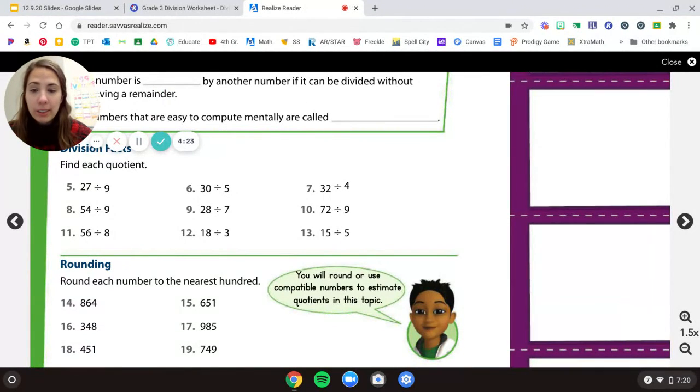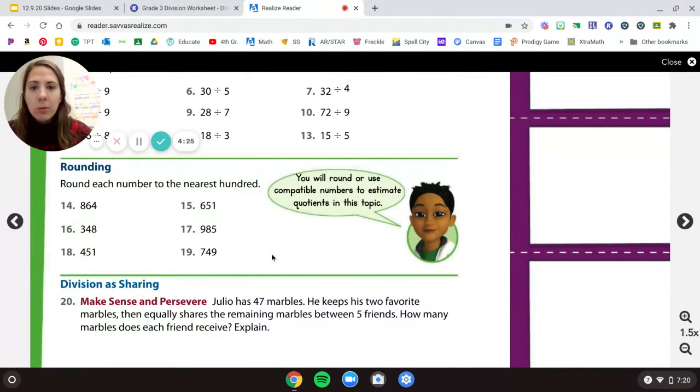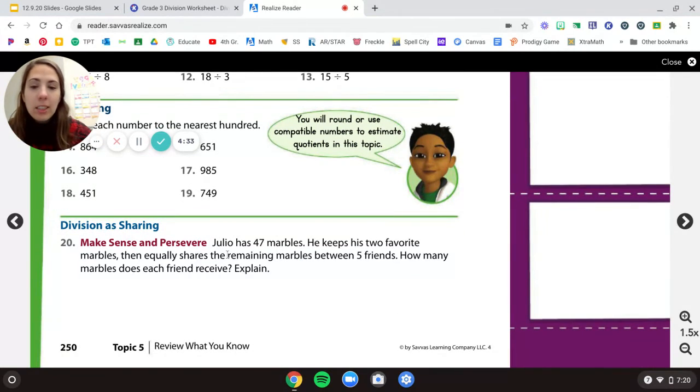Down here, just division practice. And we're going to work on rounding some more because we can never be too good at that. So we're going to keep practicing to the nearest hundred there. Down here is a word problem. Something's a little tricky because Julio is going to keep some, and you're trying to figure out how many the rest of his friends get. You might want to draw a picture. You might want to do a math sentence to help you try and solve that one.